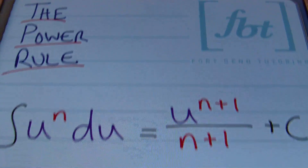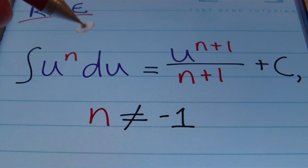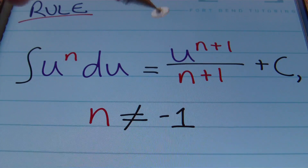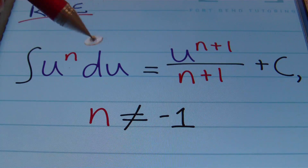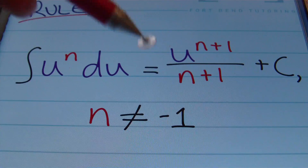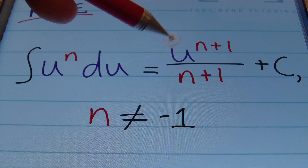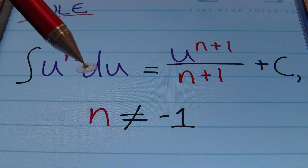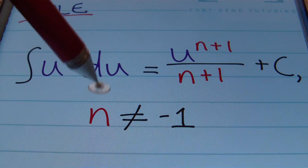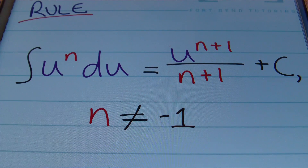First let's look at what the power rule is. We have the integral of u to the n du, which is equivalent to u to the n+1 divided by n+1, plus your constant of integration. You have a variable or function raised to a power with respect to that variable, and to integrate it you add 1 to its exponent and divide by that same value, with the condition that n cannot equal negative 1. If the exponent equals negative 1, you'll have to use another method.